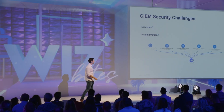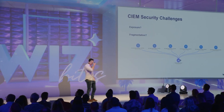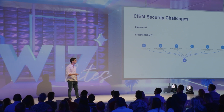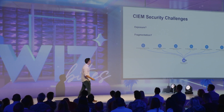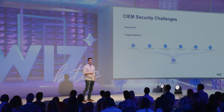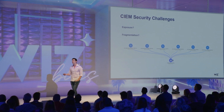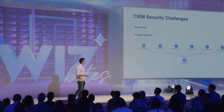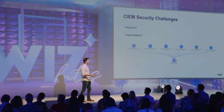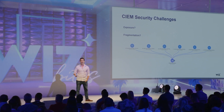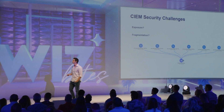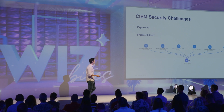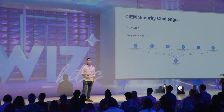The second thing is fragmentation. Not only does everything have permissions in the cloud — every single asset, every single virtual machine — but more than that, everyone can assign these permissions. Developers, when they start their virtual machines, when they create their cluster, they give it permissions. They don't ask anybody, should I give it admin? They just do what they need. So fragmentation is a really big challenge.